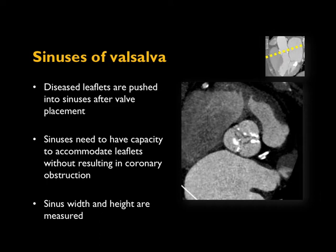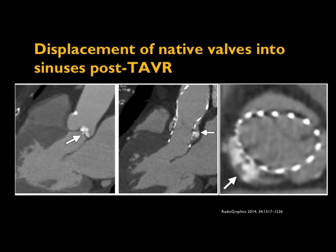The sinuses of Valsalva are important to measure to avoid the main problem: pushing diseased, calcified leaflets into sinuses that aren't large enough to accommodate them, potentially resulting in coronary obstruction. Here's an example from the literature showing a pre- and post-TAVR acquisition where a large chunk of calcium is displaced into the non-coronary cusp space — which is fine here — but if this happened in the right or left cusp, it could present a serious problem.